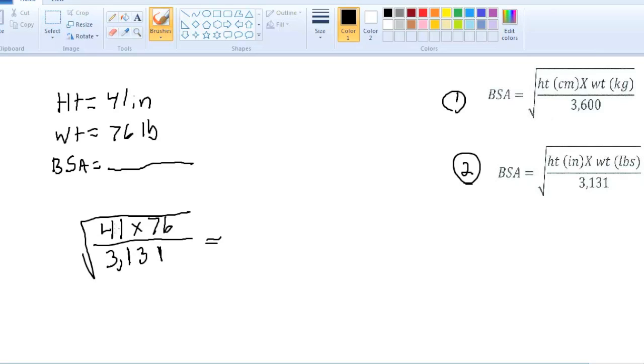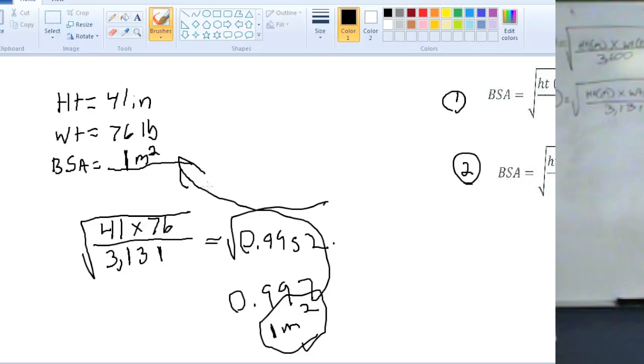Again, press and multiply 41 times 76. Press the division button. And you press 3,131. You should get 0.9952. And you have to press that square root button. Once you press that square root button, the final answer should be 1. Again, if you round it, you probably would have got an answer like 0.997. If you round the 7 to the 9, this should equal a 10, which rounds it. And your final answer should be 1.